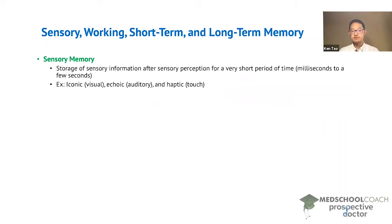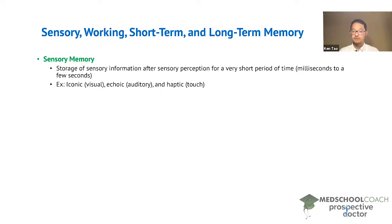There are several types of sensory memory. There is iconic memory for visual sensory information, echoic memory for auditory sensory information, and haptic memory for touch sensory information. The amount of time that each of these types of sensory memories can be stored is different. For example, iconic memory is shorter-lasting than echoic memory.